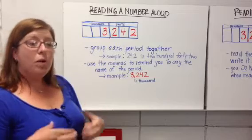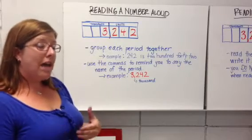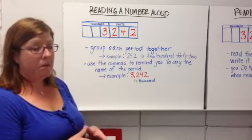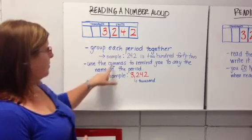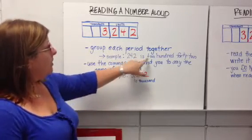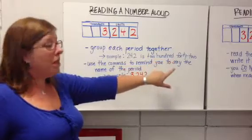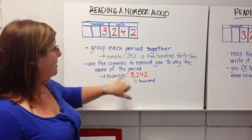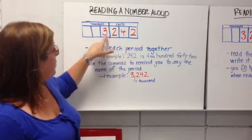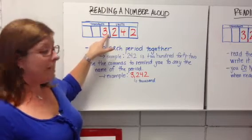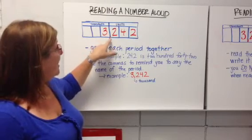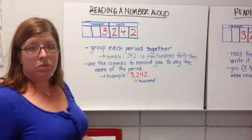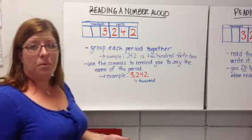When reading it aloud and you haven't written it before, you can group each period together. For example, 242 is just 242 — we know that. So we can use the comma to remind us to say the name of the period. Here we have 3 in the thousands period, so we'd say 3,000. And then group that whole unit together: 242. It's that simple.